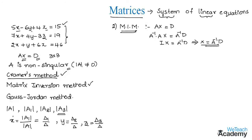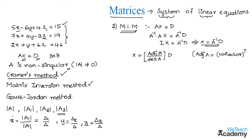The formula for A inverse is: adjoint(A) divided by delta(A). So X equals adjoint(A) divided by delta(A), multiplied by the constant matrix D. The adjoint of matrix A is the transpose of the cofactor matrix. By multiplying both matrices and equating the elements, we get the solutions.